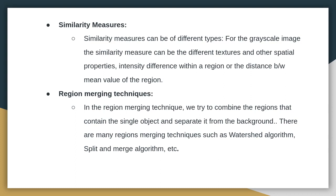Region merging techniques use similarity measures to merge regions. In region merging, we try to combine regions that contain a single object and separate it from the background. There are many region merging techniques such as the watershed algorithm and the split-and-merge algorithm.